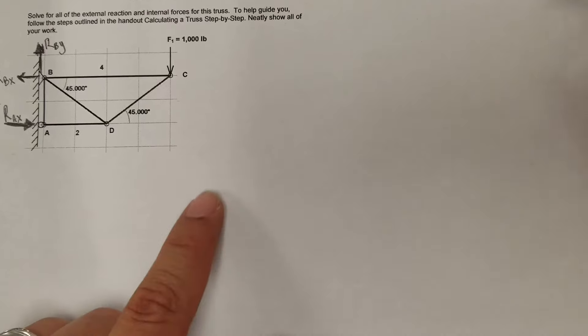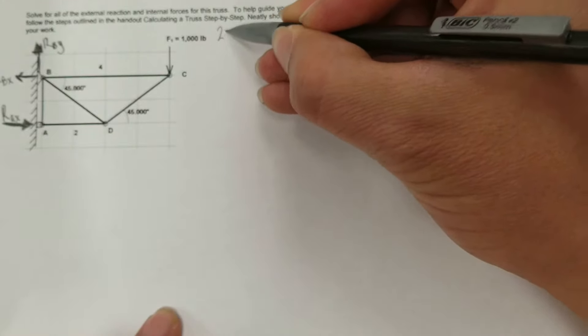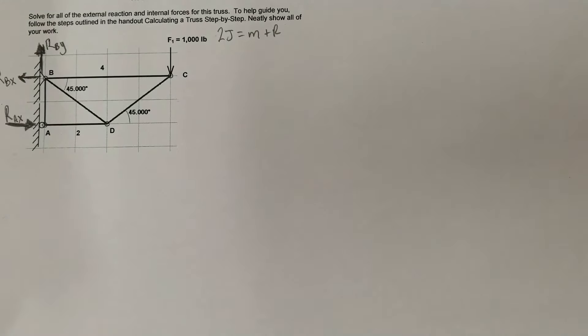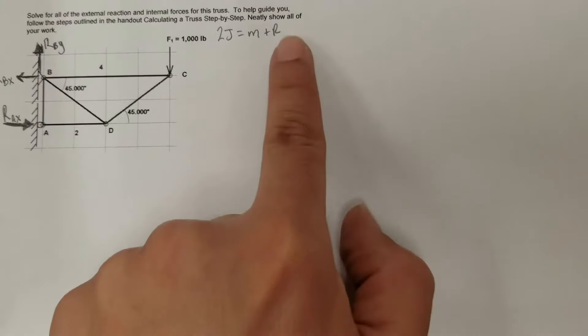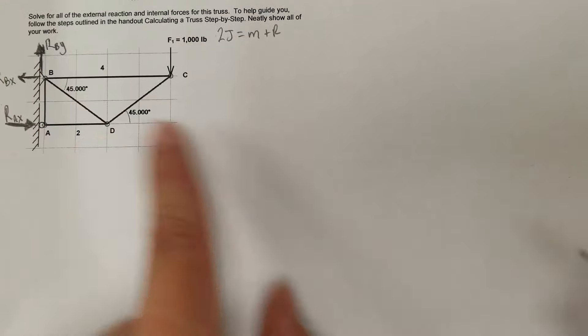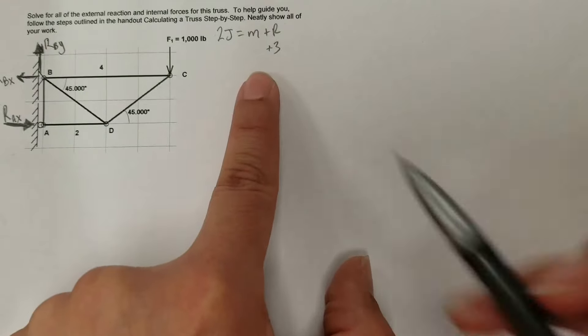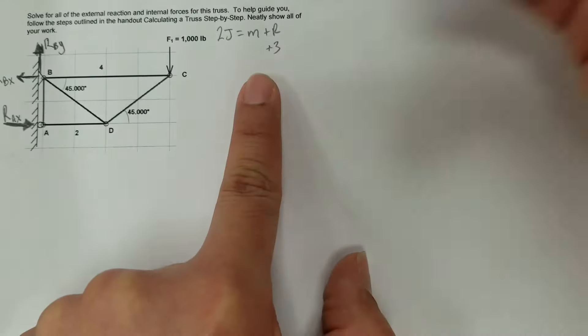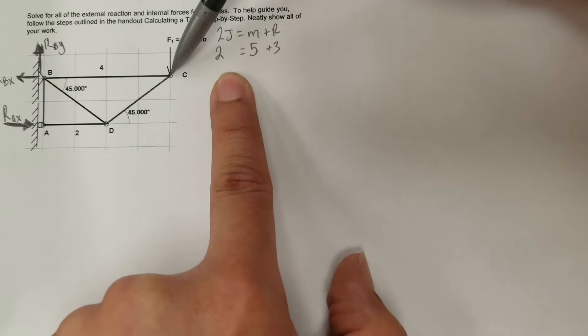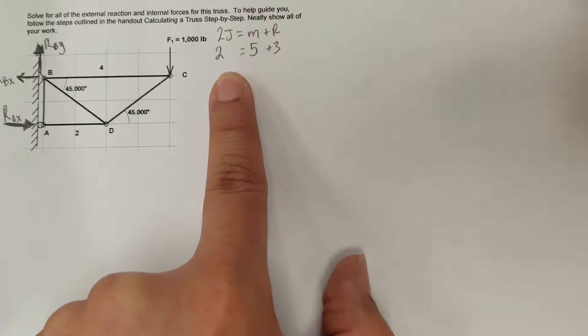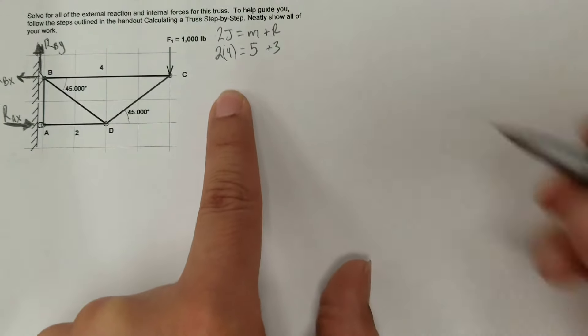Let's solve this. Step one: make sure your truss is statically determinate using the formula 2j = m + r. J is the number of joints, m is the number of members, and r is the number of reaction forces. We just figured out there are three reaction forces, and counting the members we have five. Counting the joints — C, D, B, and A — we have four joints, giving us 2(4) = 5 + 3.